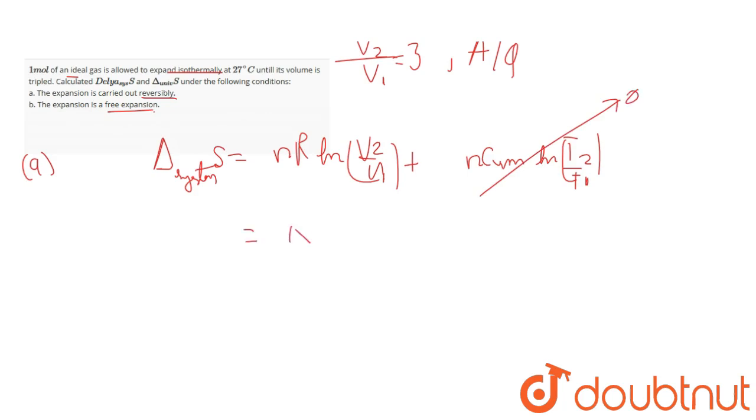With n = 1 mole, R = 8.314, and V2/V1 = 3, the calculation gives nR ln(3) = 1 × 8.314 × ln(3) = 9.135 Joule Kelvin inverse mole inverse.